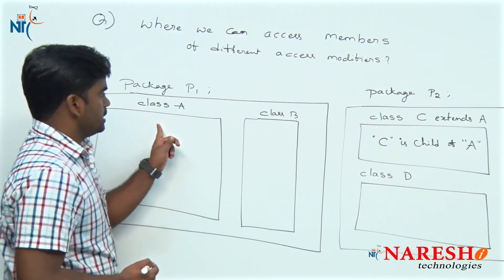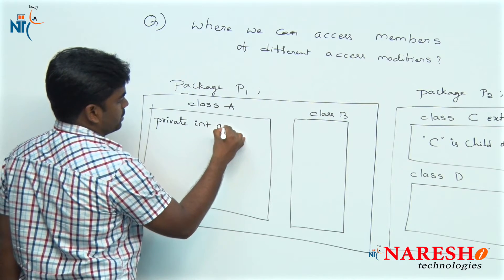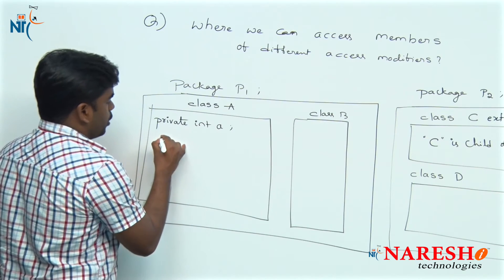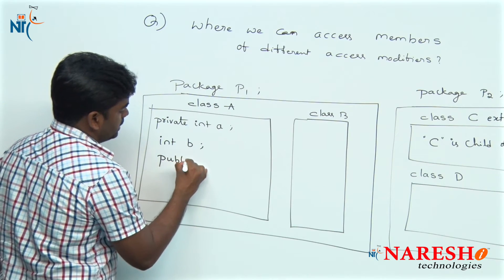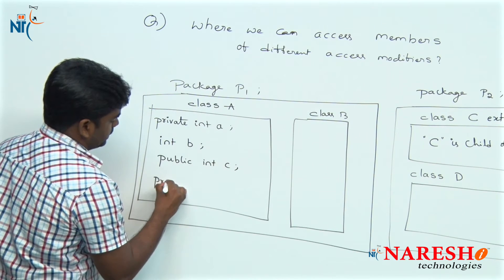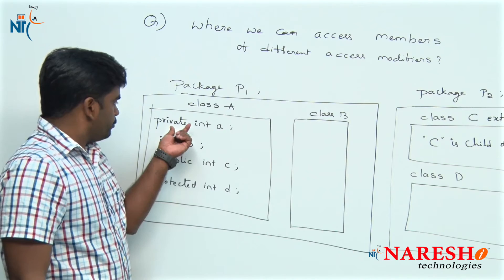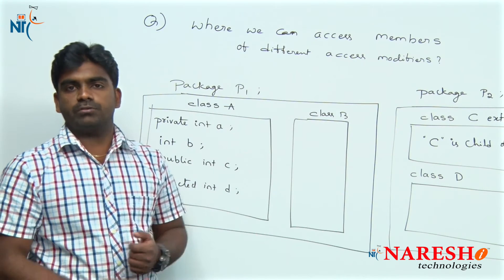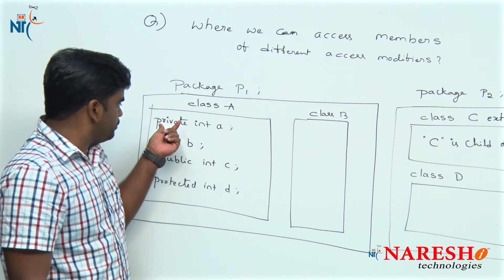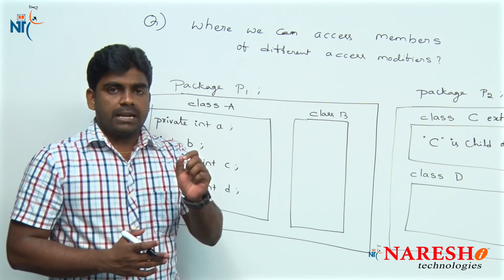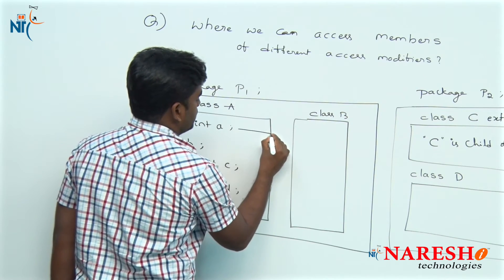In class A of the first package, we are defining four variables with four different access modifiers: private int a, and if you are not applying any access modifier it is package level by default. The third one is public and the last one is protected. So, four variables with four different access modifiers.